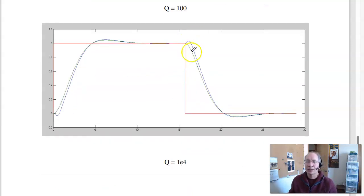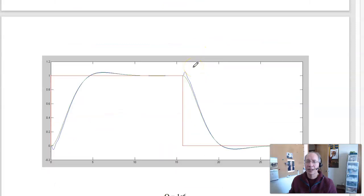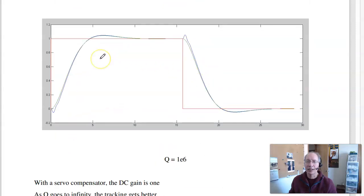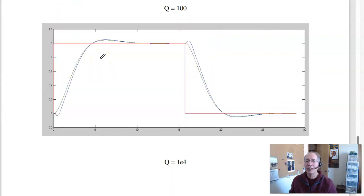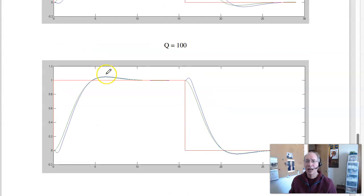Crank up the gain to 10 to the fourth, better tracking. 10 to the sixth, almost dead on. And that's kind of the idea behind LQG LTR. I can define the reference model pretty much any way I want, and then I force the plant to follow that reference model. That's a neat way to do feedback control. If I want to change how I want it to behave, just change the reference model.